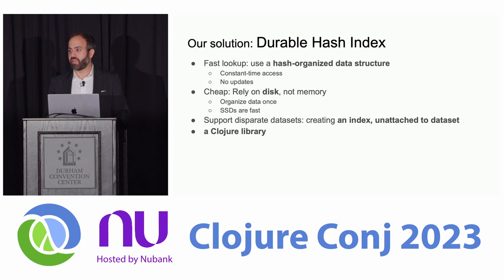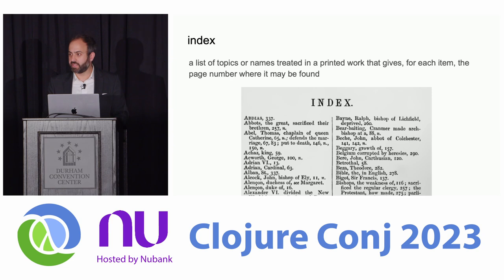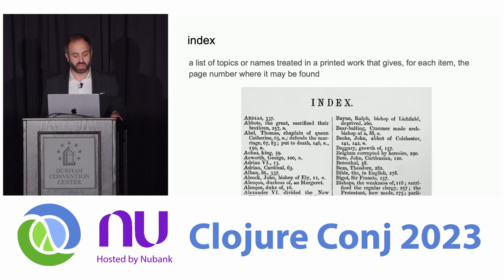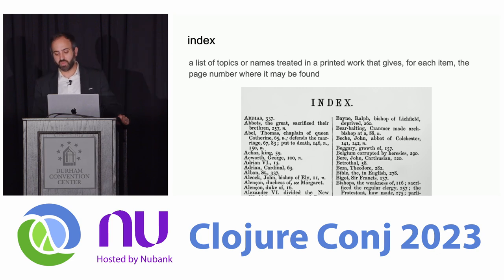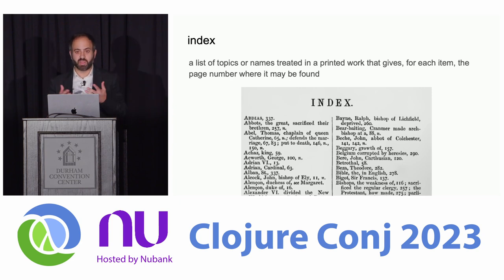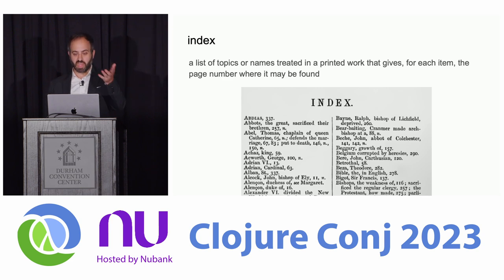Let's dive into this library. What's an index? Dictionary definition time — it is a list of topics or names treated in a printed work that gives, for each item, the page number where it may be found. Is an index useful on its own? No — I'm not looking for the page numbers, I'm looking for the content that is associated with the topic that I'm looking for. So an index looks a lot like a map. It's not key to value, it's key to location and then location to value elsewhere.